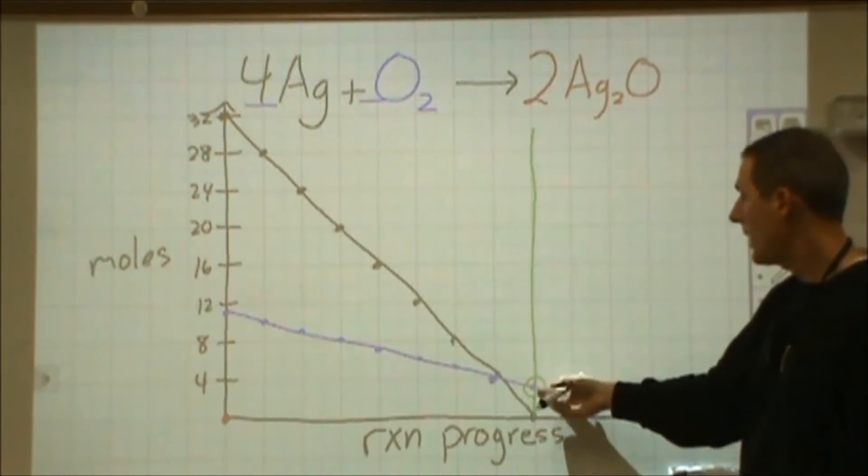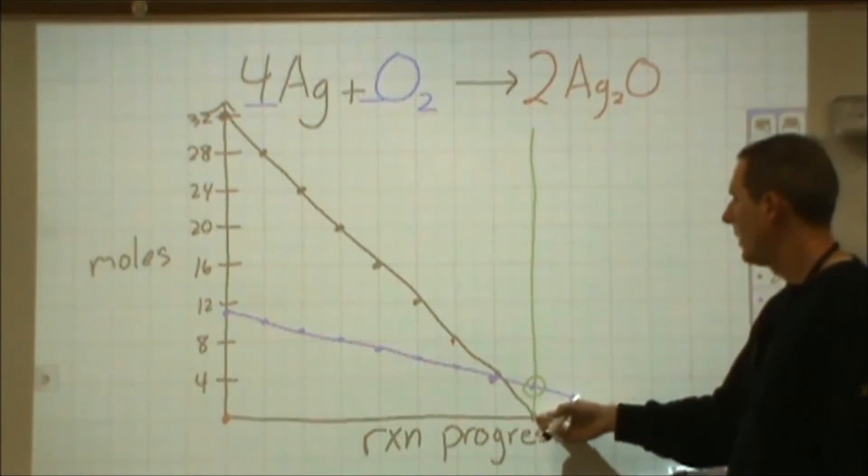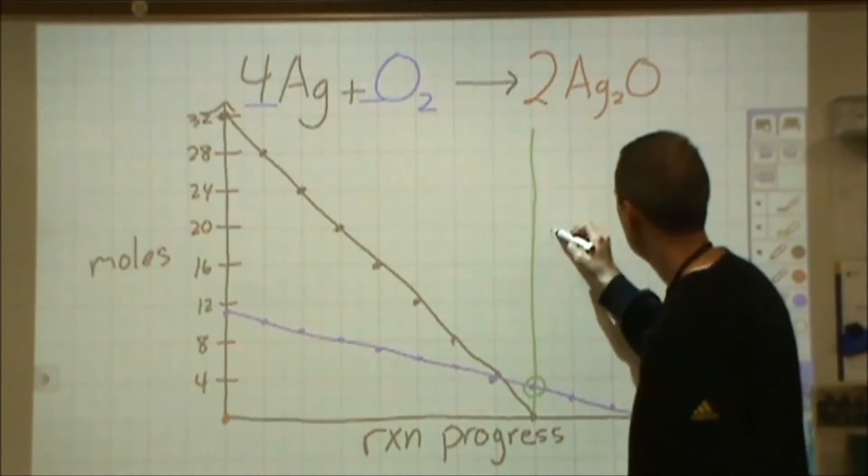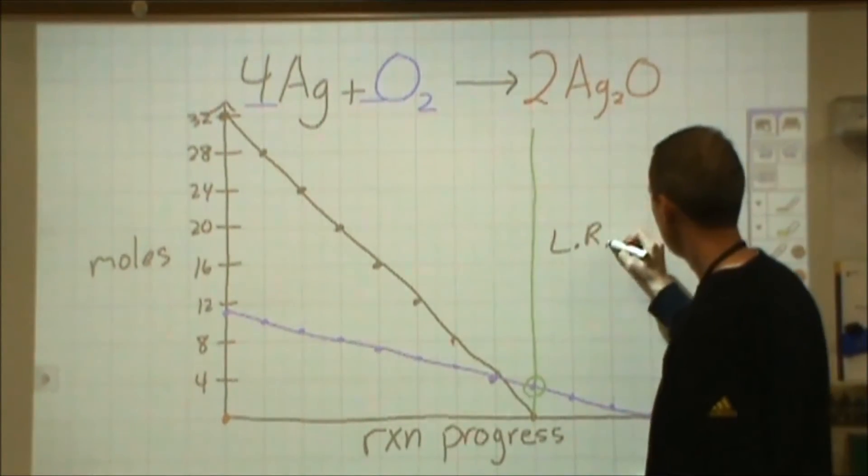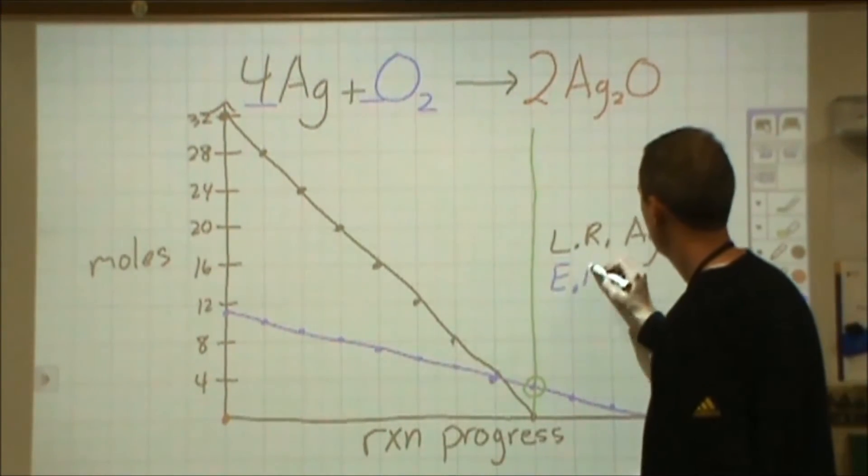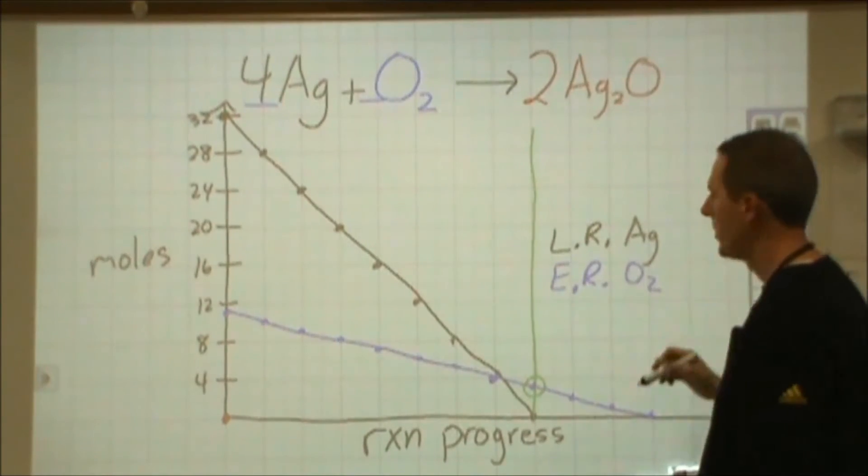So I have an excess of oxygen here that we'll look at, and then I've run out of silver. So silver, then, would be my limiting reagent. And I would have excess reagent O2 in this particular case.